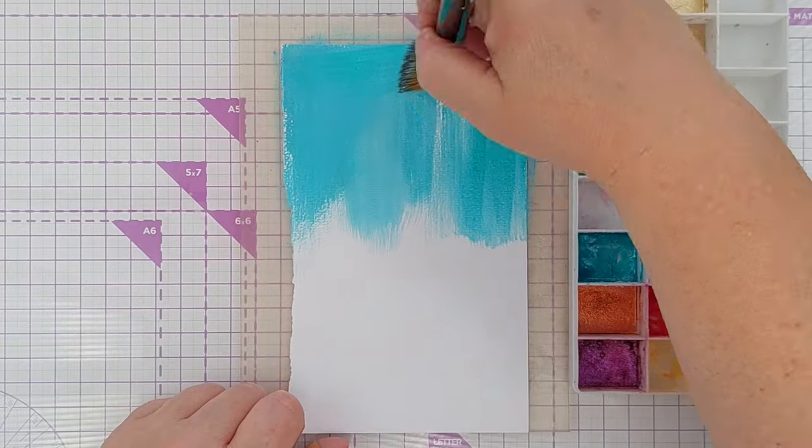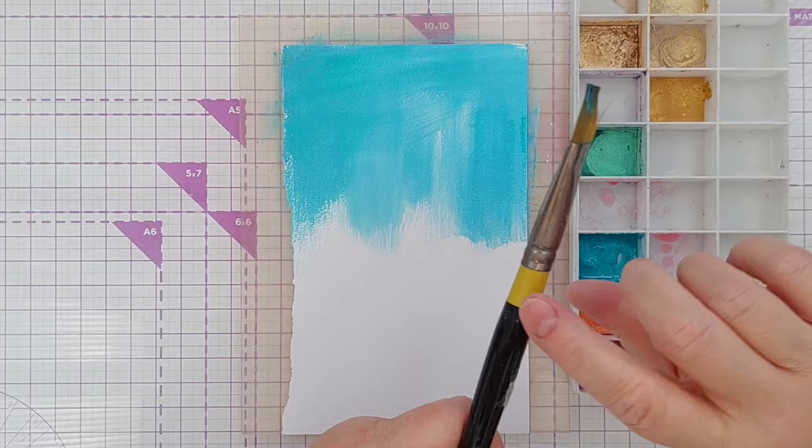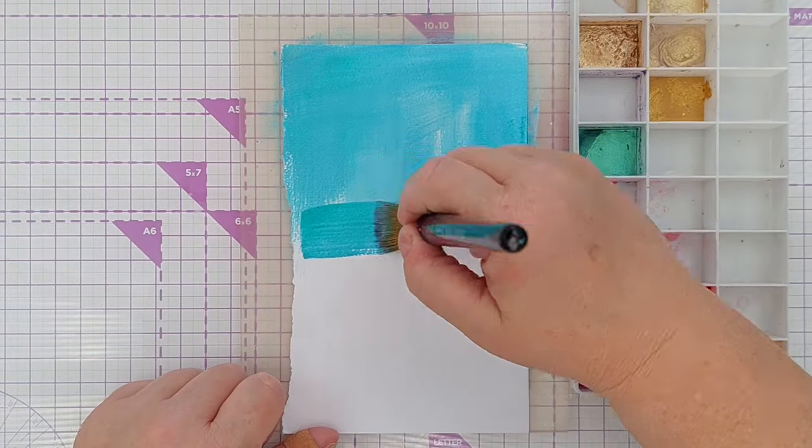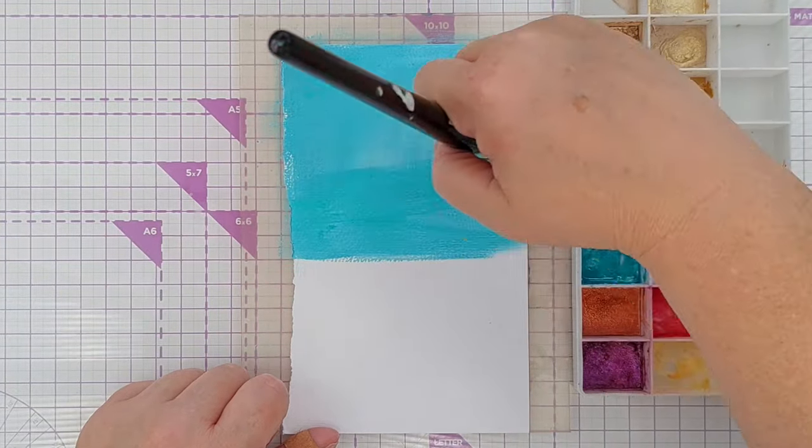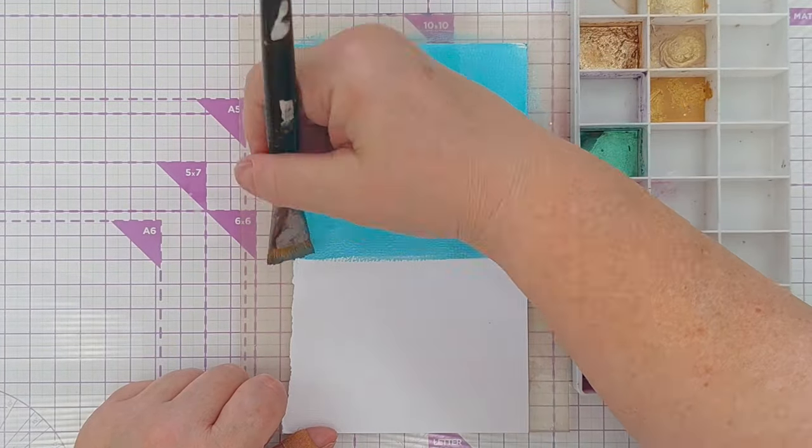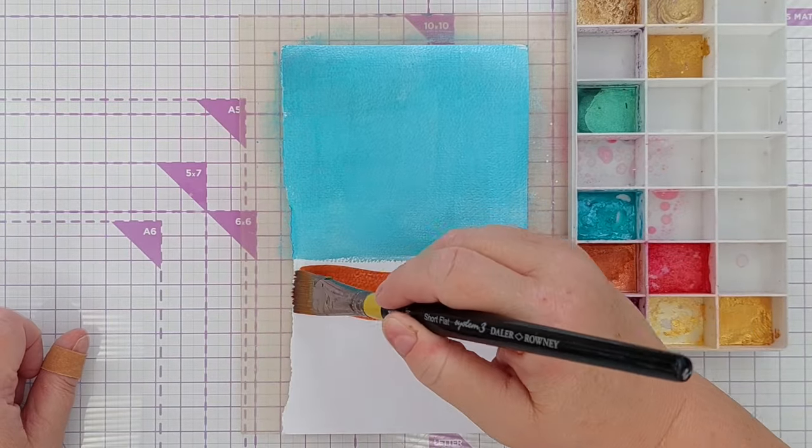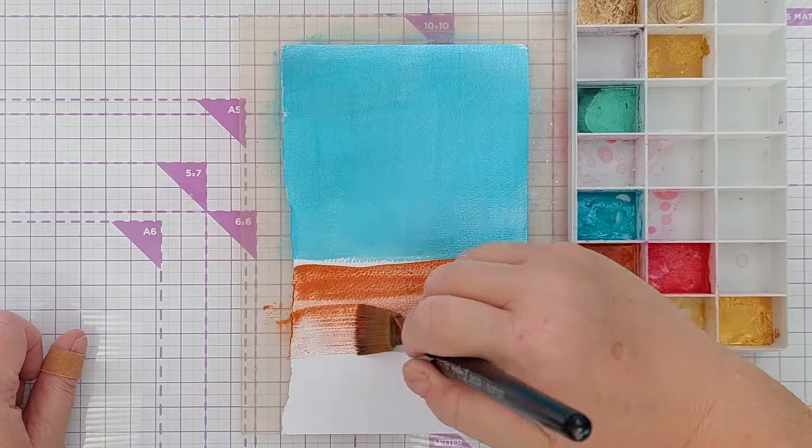For today's card I'm going to use the teal paint which I reactivated by squirting in some water and some copper paint which I also reactivated. These paint on really nicely and thickly and give a lovely shimmery shiny bold finish.